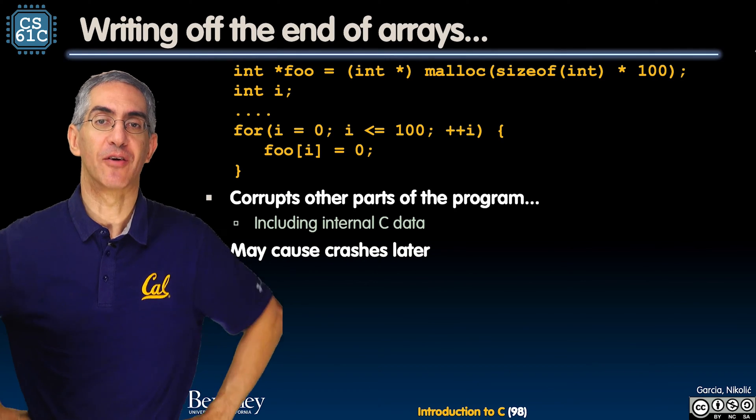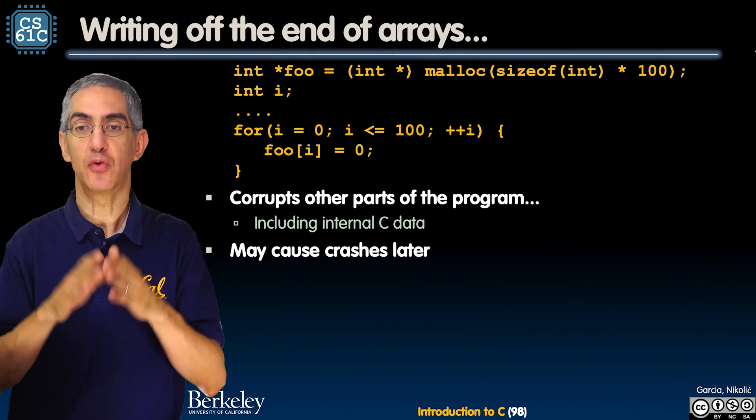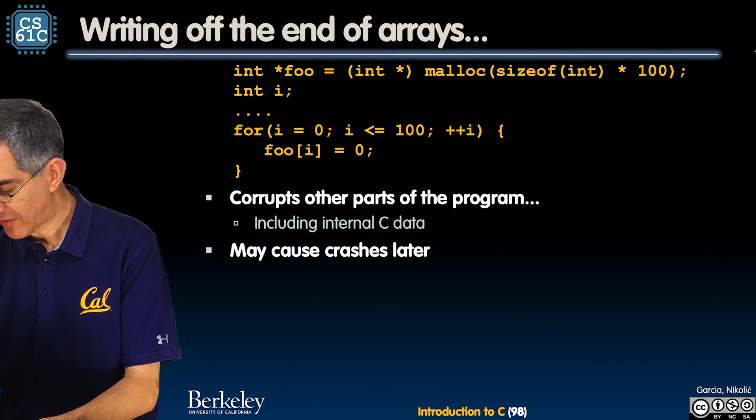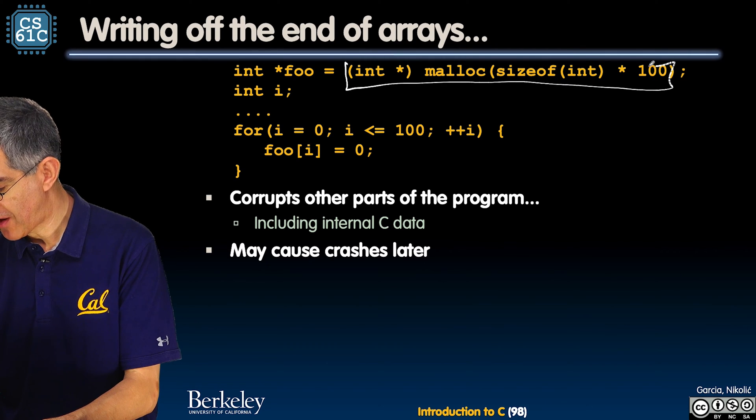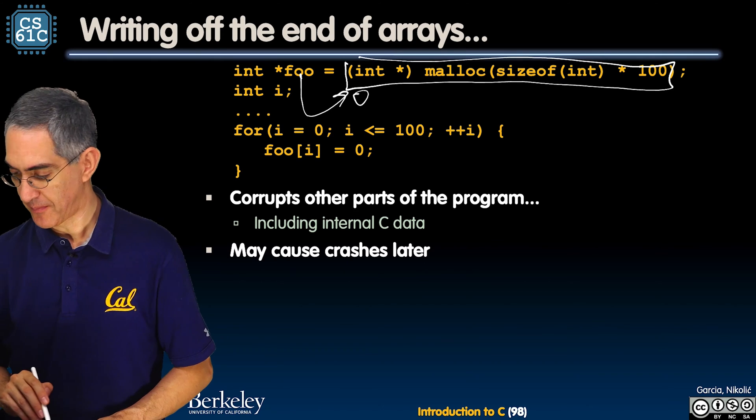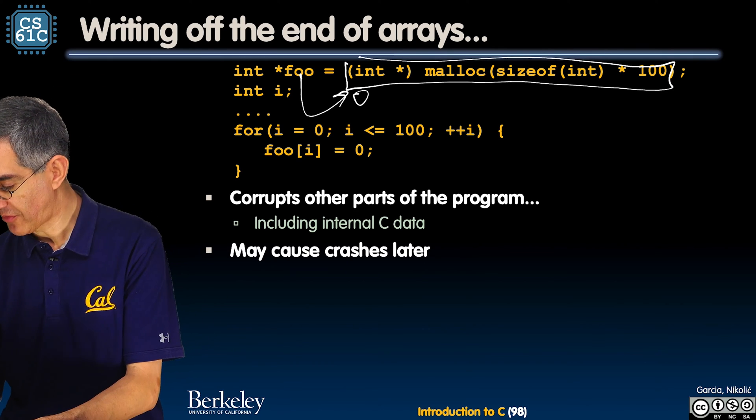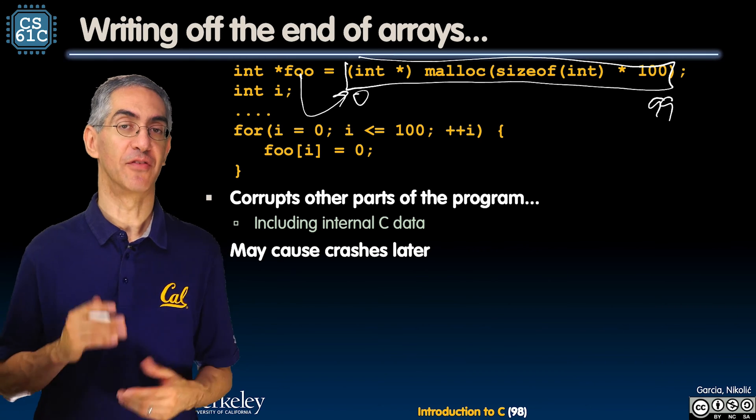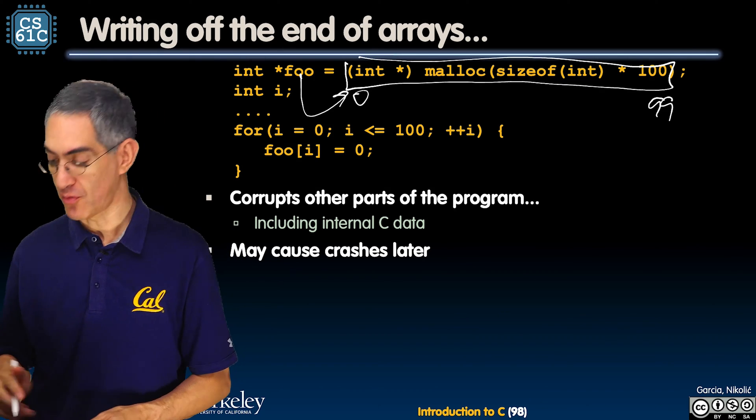This is the easiest case, writing off the end of an array. Here's foo, it makes a hundred. I'll use a little picture. So it makes a little array. I'll just say that's my array and foo points to the beginning of it, the zero element. It's a hundred elements, so zero up to 99.